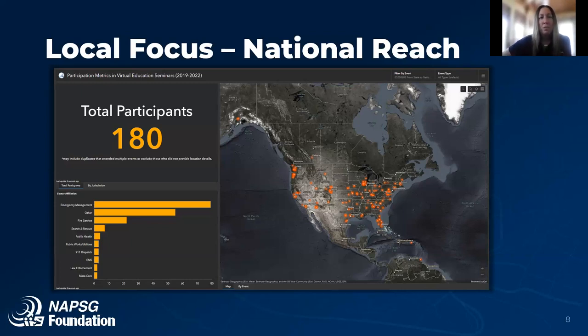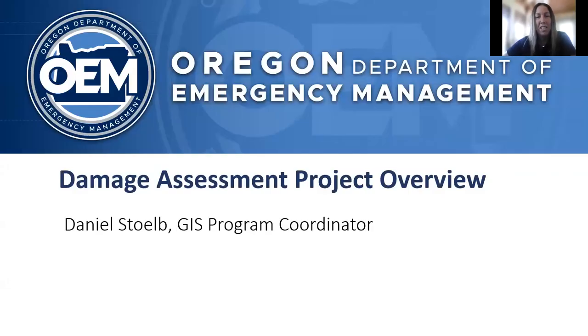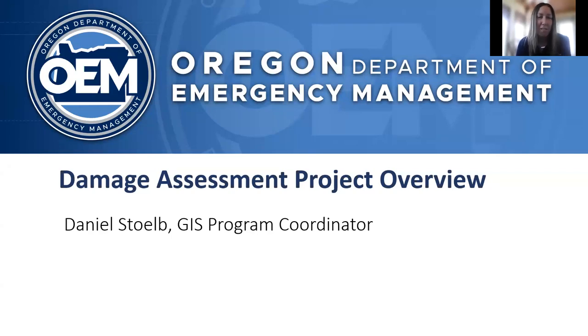I am super excited to introduce an EMGIS rock star who will get us kicked off with a local perspective on damage assessments. Daniel Stolb has been involved with geographic information systems since 2006, starting with the Oregon Department of Forestry, then working in local government for the Douglas County Planning Department, until transitioning to the Oregon Office of Emergency Management where he is the GIS Program Coordinator. He is also the co-lead for the National States Geographic Information Council's Geospatial Preparedness Interest Group, and a recipient of the 2020 Special Achievement in GIS Award from ESRI.